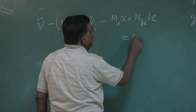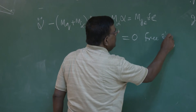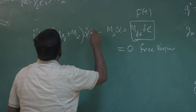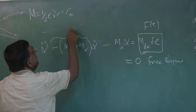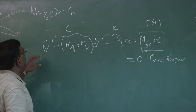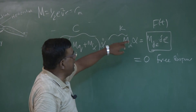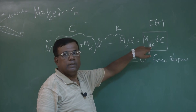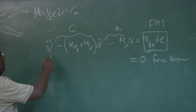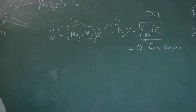For the free response, we set the right-hand side to 0. This is exactly the same form as the second-order system: x_double_dot + c*x_dot + k*x = f(t), where the forcing function M_delta_e*delta_e is like f(t), the (M_q + M_alpha_dot) term is like c, and M_alpha is like k. The problem is now in a solvable second-order form.